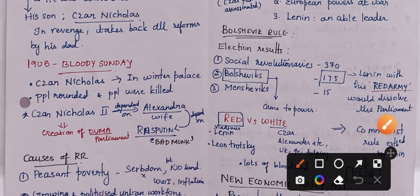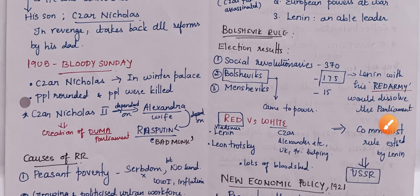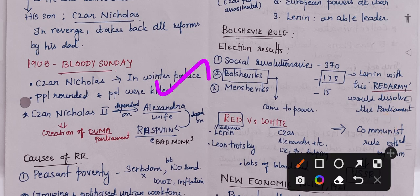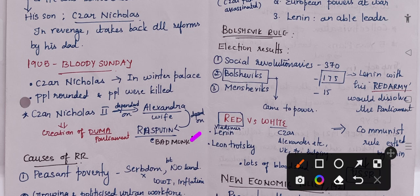In 1905, Bloody Sunday happened, in which Tsar Nicholas was in the Winter Palace and people were drowned and killed. Tsar Nicholas II depended on his wife Alexandra, and she was dependent on Rasputin, who was a bad monk. This led to the creation of the Duma, which is the parliament of Russia. This marks Bloody Sunday.